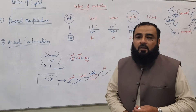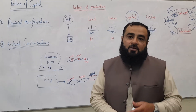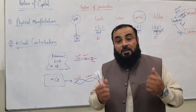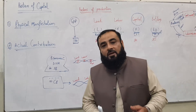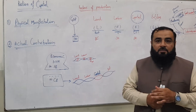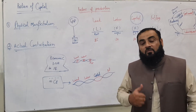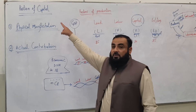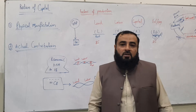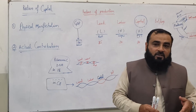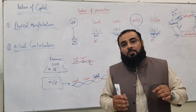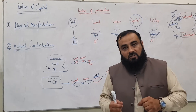Before this lecture, we have discussed already what is risk and what are the types of risk in Islamic and the conventional paradigm. This lecture is a continuity of the previous lecture, which was part one of the position of capital in Islamic and the conventional economic system. Now we are moving forward to the final phase: what is the position of capital in Islamic and the conventional economic system.